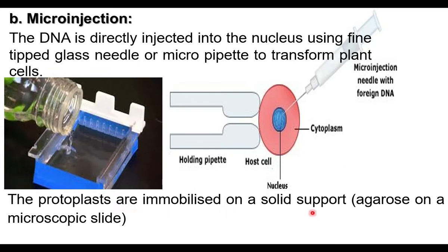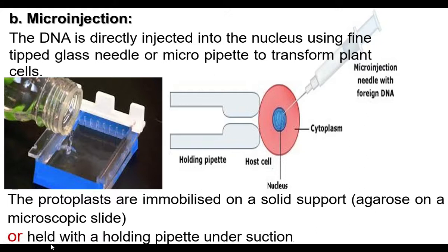The protoplasts are immobilized on a solid support by means of agarose on a microscopic slide, or kept with a holding pipette under suction so the cell is fixed without any movement. Then DNA is directly injected with the help of a fine-tipped glass needle or micro pipette into the nucleus.